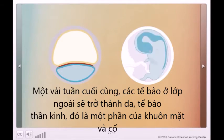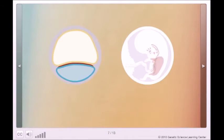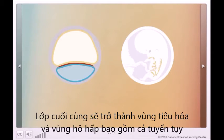A few weeks later, the cells of the outer layer, or ectoderm, have become skin, nervous system, and parts of the face and neck. The middle layer, or mesoderm, has become muscle, blood, blood vessels, and the beginnings of bones and connective tissue. The inner layer, or endoderm, has begun to form the digestive and respiratory tracts and the glands that feed into them.